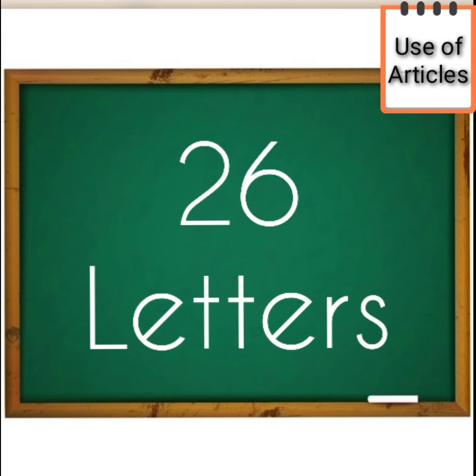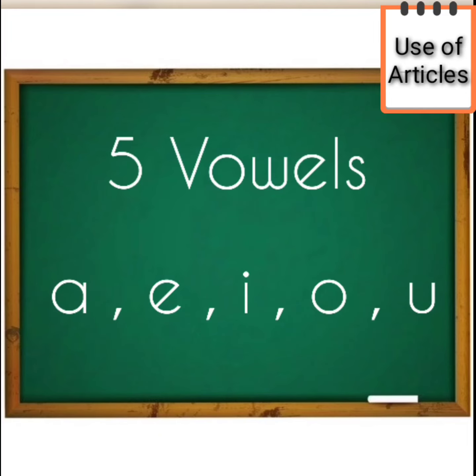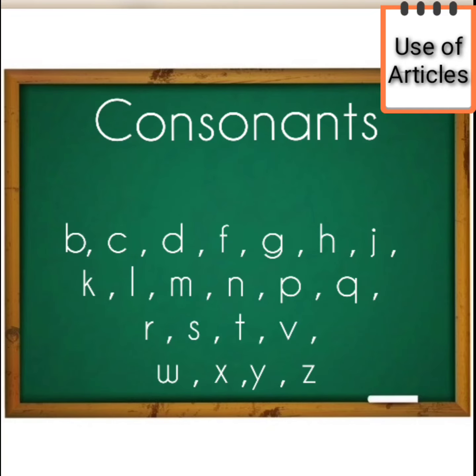Children, as you all know, there are 26 letters, from which 5 are vowels: A, E, I, O, U. And the rest of the letters, like B, D, K, F, G, H, etc., are consonants.